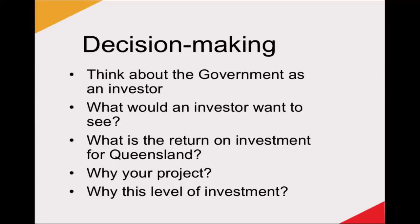There are four selection criteria for the EOI stage: impact, competitive advantage, collaboration and capability. For impact, the panel will consider what's transformative about the project, is there scalability across sectors and will it create jobs. For competitive advantage, will this strengthen Queensland's key industries or bring new capabilities. For collaboration, is the project involving the full supply chain and has customer and end user involvement been identified. For capability, the panel will look at the track record of the team. If you progress to Stage 2, technical merit will also assess feasibility, scientific or technical merit, and whether the project is well planned and achievable.